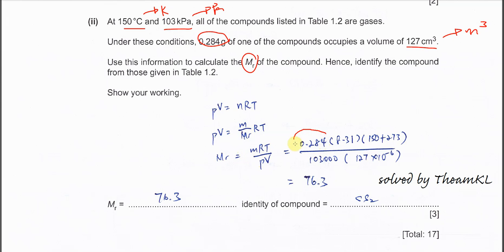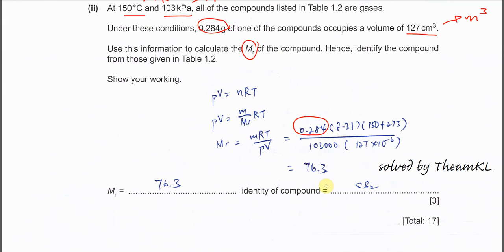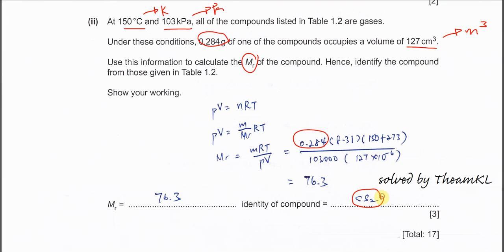Substitute all the values: 0.284 × 8.31 × (150+273) / (105063 × 127×10⁻⁶). The volume is already in m³. You should get 76.3. The identity of the compound is CS2, which matches the calculated molar mass. That's all, thank you.